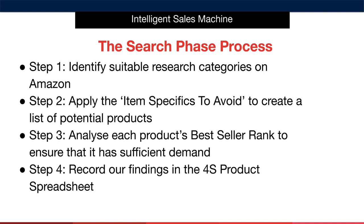Once we do that, we'll begin to go through the Amazon bestseller listings in the chosen category and apply our item specifics avoid list to each and every item we look at. This will help us rule in certain items and rule out the ones that we can't sell, avoiding wasting time on items that Amazon won't fulfill or that simply aren't suitable for our goal — a lifestyle business that can be run with as little monitoring as possible.